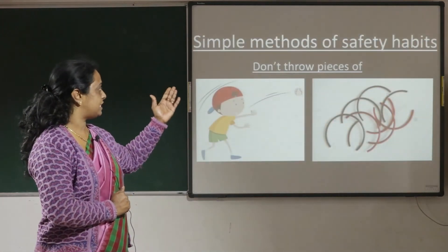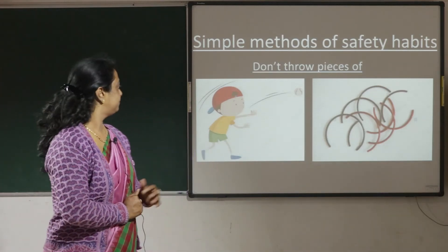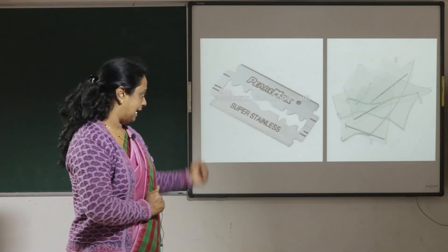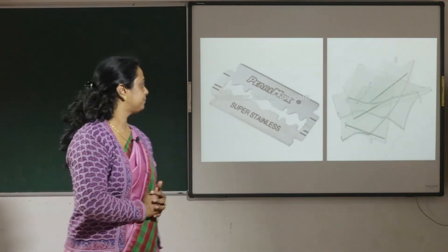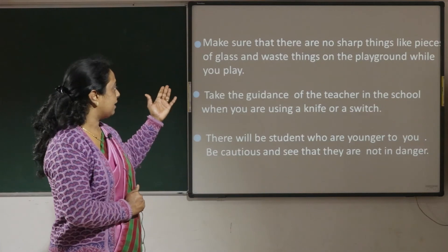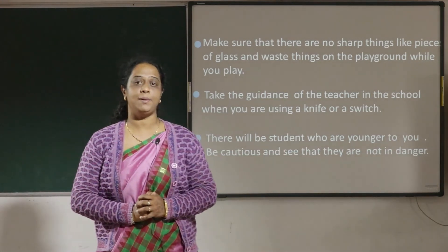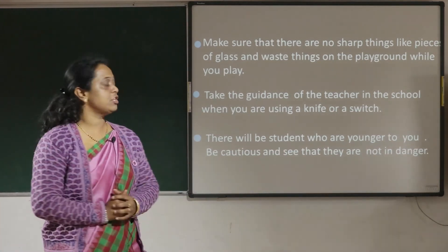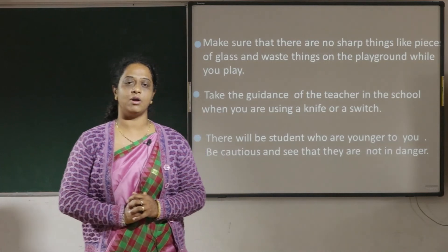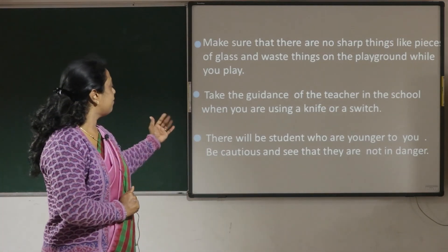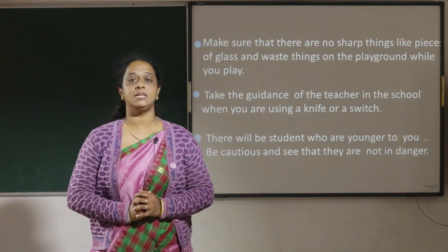Here are some simple safety habits. Do not throw pieces of bangle, blade, or glass on the playground. Make sure there are no sharp things like pieces of glass or waste on the playground while playing. Take the guidance of your teacher when you are using a knife or a switch. Be cautious of students who are younger to you and see that they are not in danger.